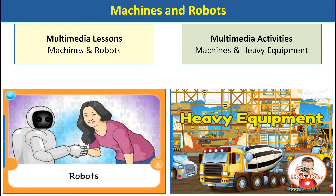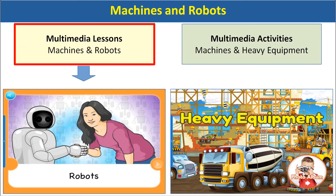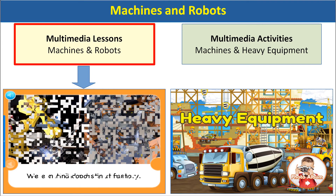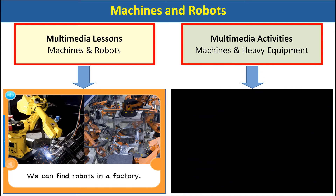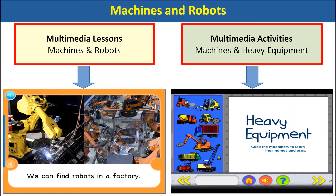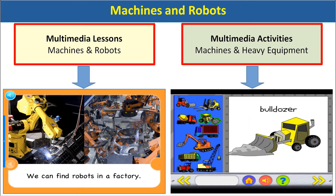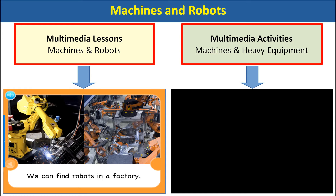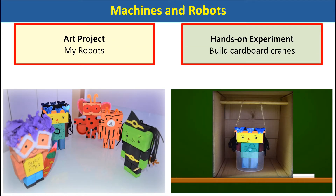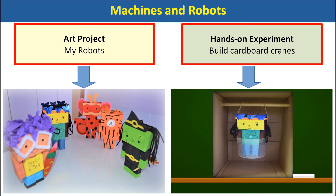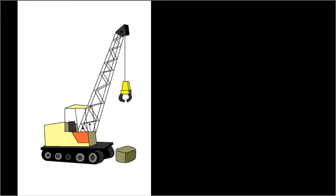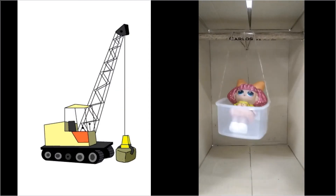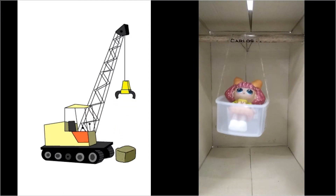Machines and Robots: This topic introduces children to technology and engineering through multimedia lessons and interactive activities, including heavy equipment where children click on machinery to learn their names and uses — for example, a bulldozer. In the art project and hands-on experiment, children make their own craft robot, then build a cardboard crane and use it to experiment with the pulley system. Through a combination of these activities, children develop an appreciation of how these machines and robots can be used.